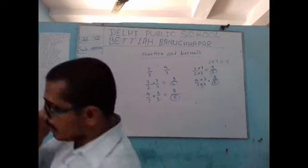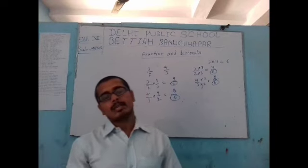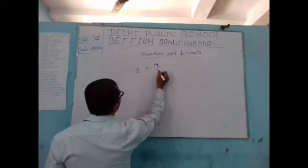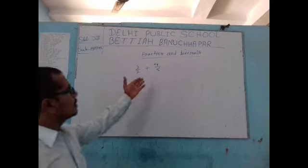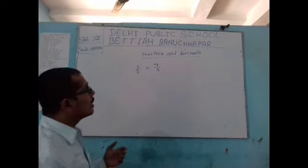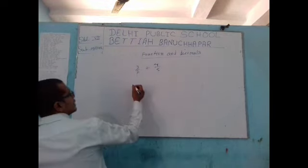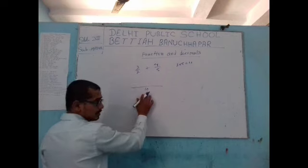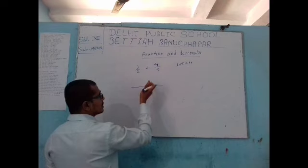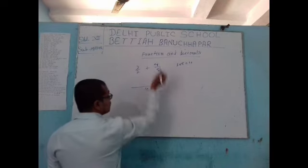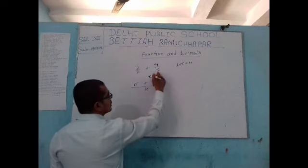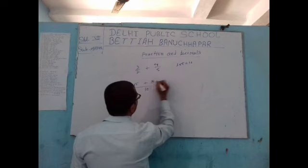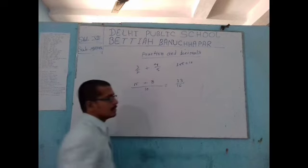Next, in this chapter we cover addition, subtraction, multiplication, and division of fractions. To add 3 by 2 plus 4 by 5, take the LCM of 2 and 5, which is 10. Divide 10 by 2 to get 5, then multiply the numerator: 5 times 3 is 15. Divide 10 by 5 to get 2, then multiply the numerator: 2 times 4 is 8. So the answer is 15 plus 8 over 10, which equals 23 by 10.